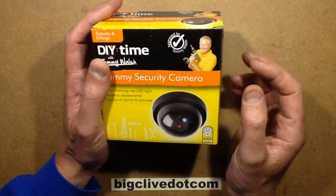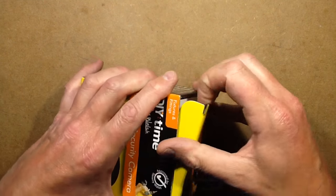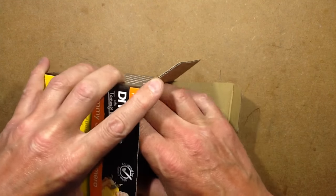Poundland does this dummy security camera with flashing red LED light, and I have to say it looks the part. But there is a way you can make it look even more convincing.